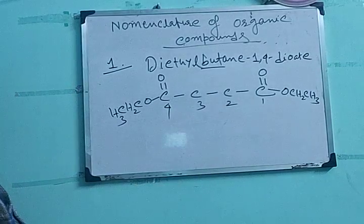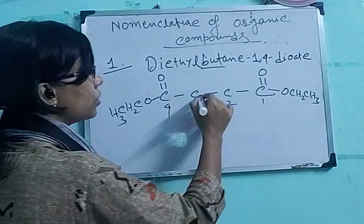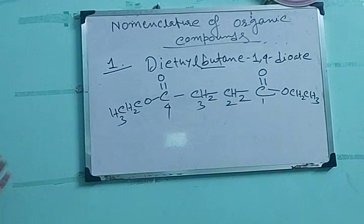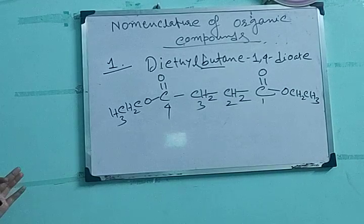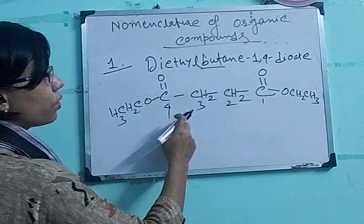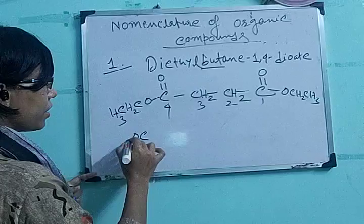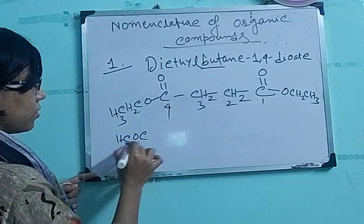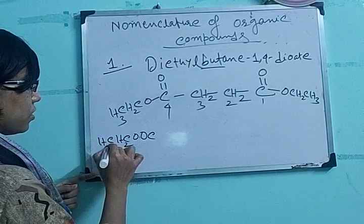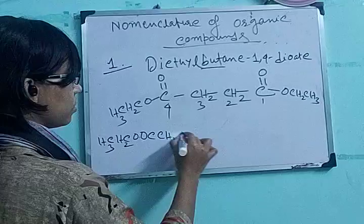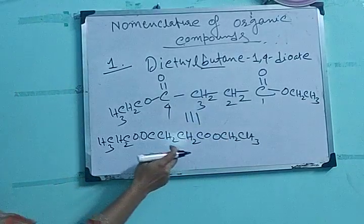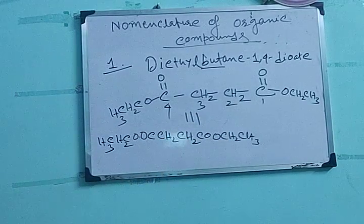Now put the number of hydrogen atoms according to the valency of carbon. So here it would be CH₂, and here it would be CH₂. This is the structural formula of diethyl butane-1,4-dioate. In condensed form it is written as: COO-CH₂CH₃-CH₂-CH₂-COO-CH₂CH₃.